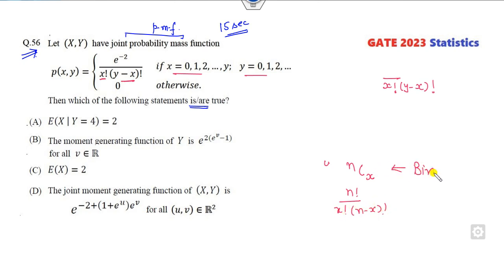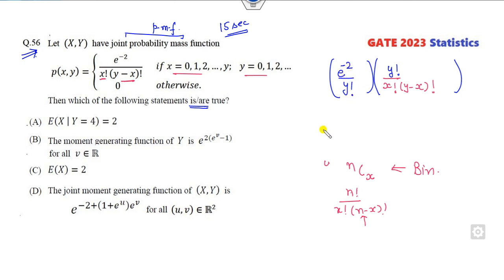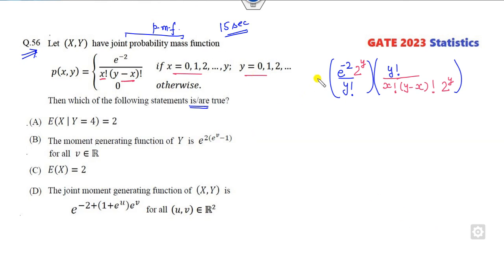So here we need n factorial; in this case n is my y, so if I divide and multiply by y on both sides that is fine. Now think about which distribution involves e raised to some power and a factorial — there is a Poisson distribution. You can see here e raised to power minus 2, and there is a need for 2 raised to power x. Here y: 2 raised to power y — I can multiply and divide by 2 raised to power y on both sides. Now you can see this is e raised to power minus 2 times 2 raised to power y over y factorial — this is the first part.